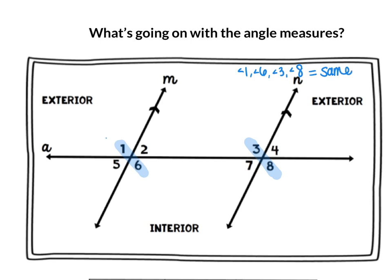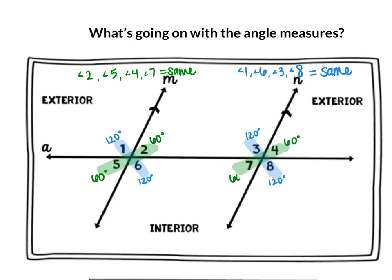If angle 1 is 120 degrees, then automatically angles 6, 3, and 8 are also 120 degrees. Then I use a second color for the other group: angle 2 and 5 are the same — different from 1 and 6 — and those correspond to angles 4 and 7. So angles 2, 5, 4, and 7 are all the same as each other. Since angles 1 and 2 are supplementary, angle 2 must be 60 degrees — and therefore angles 5, 4, and 7 are also all 60 degrees.